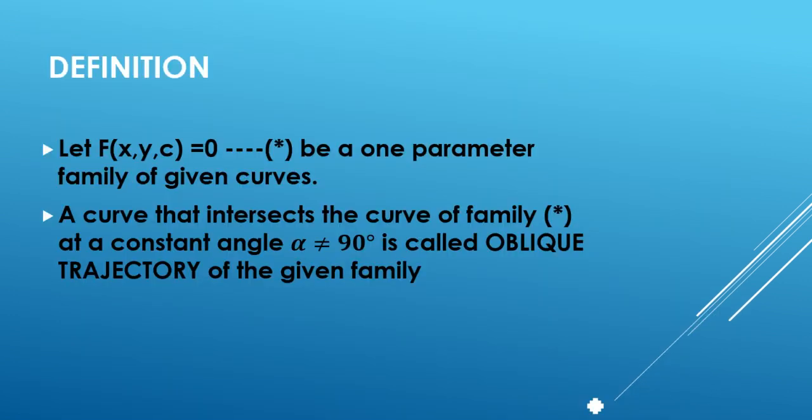So if we look onto the definition, if we have a function given f(x, y, c) = 0, a one-parameter family given by some curves. So if that curve, any other curve intersects the given curve with some angle, but that angle is not 90 degrees, then we will say the other curve to oblique trajectory.